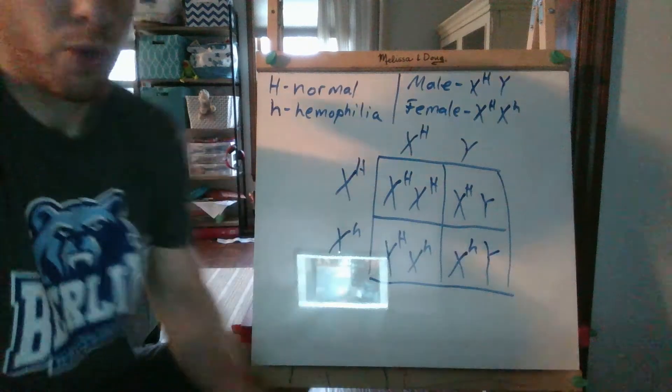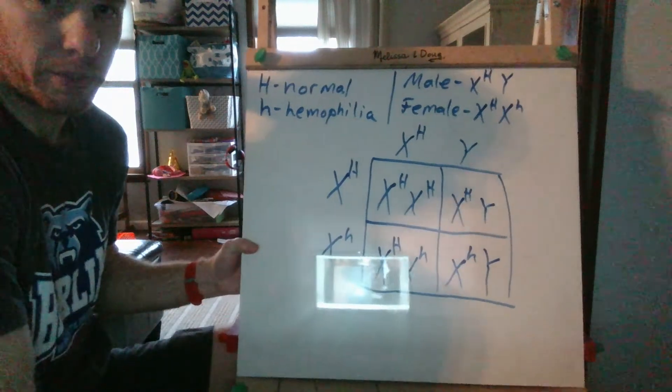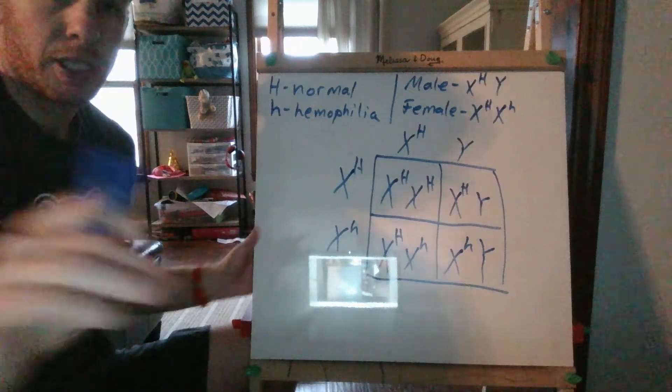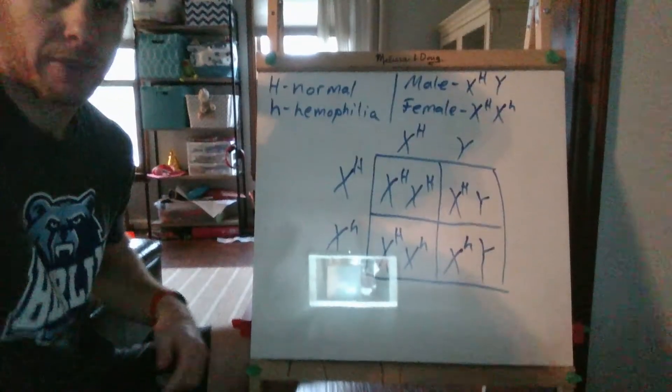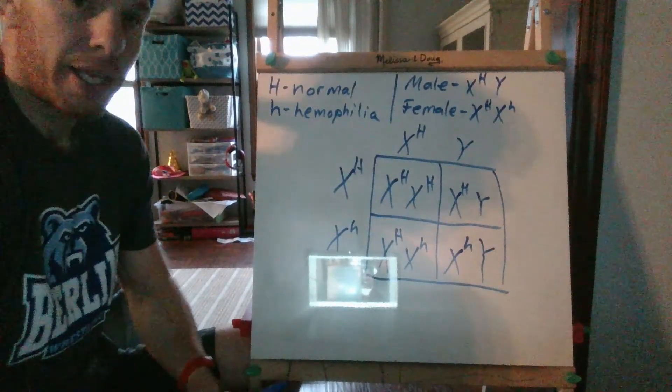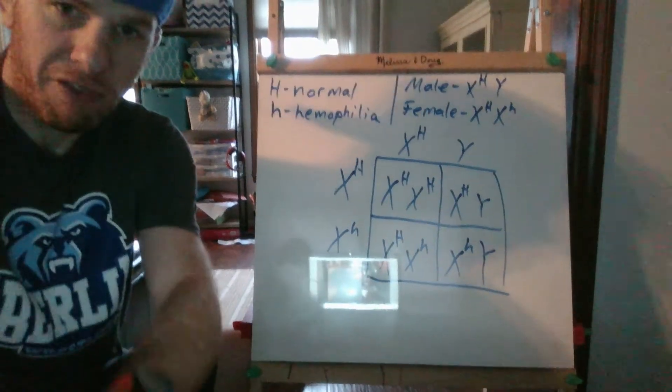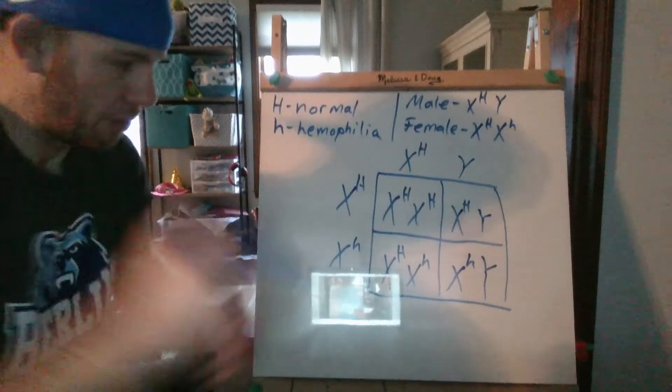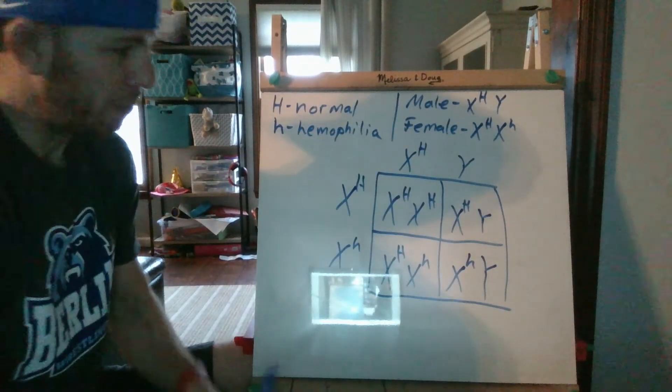So there you have it. In any type of Punnett square, it's always a 50% chance of male or female, right, X and Y. But what do we have here?